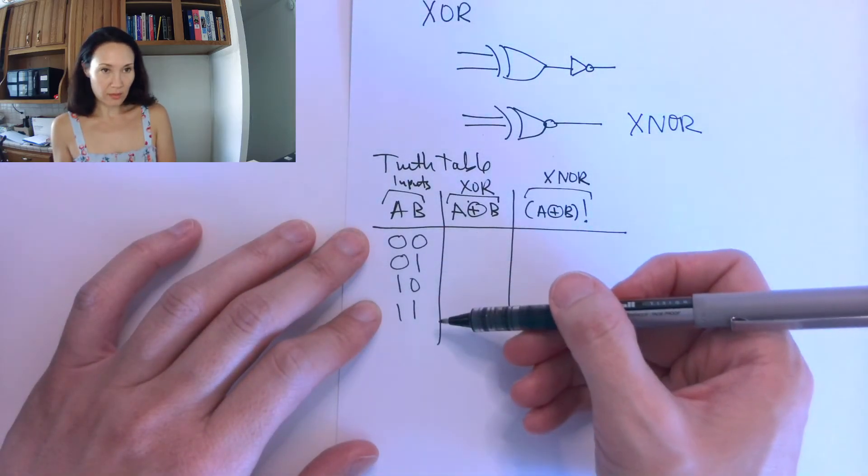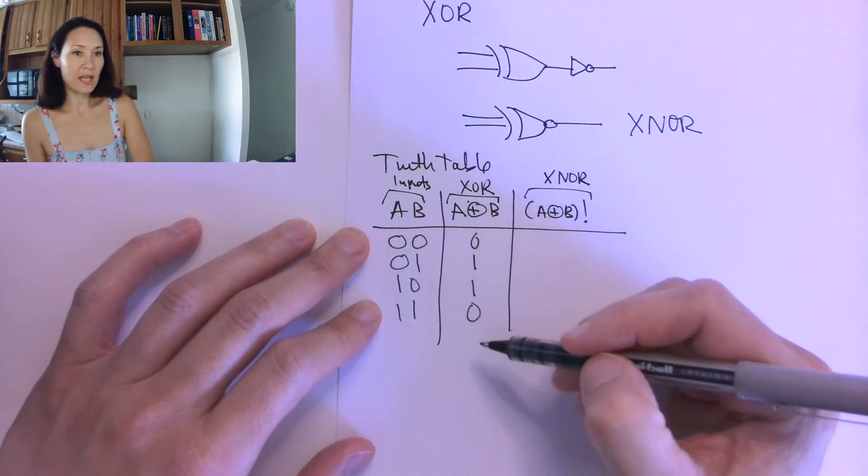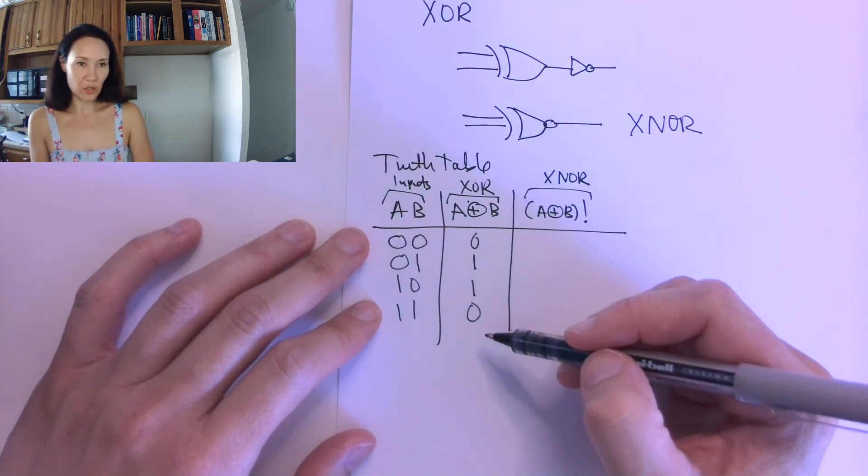If we XOR these, this is only going to be 1 if both of the bits are different. If they're the same, our output is 0. That's the definition of XOR.